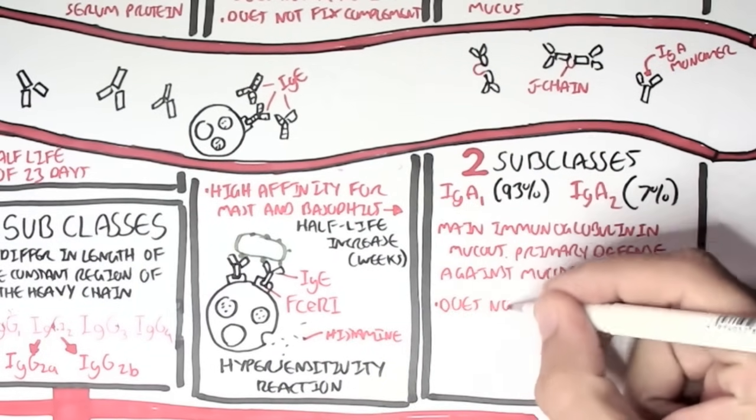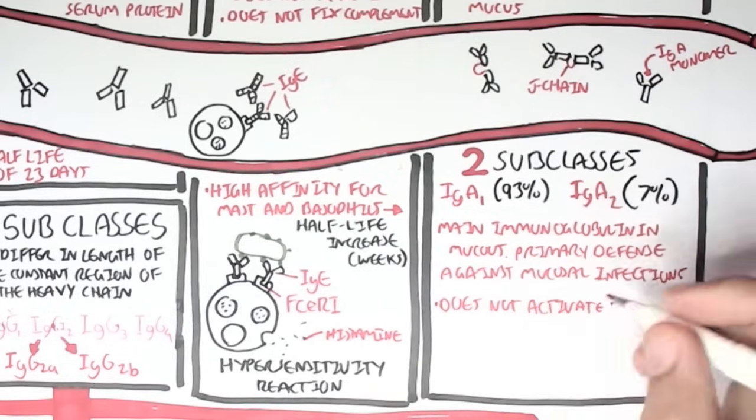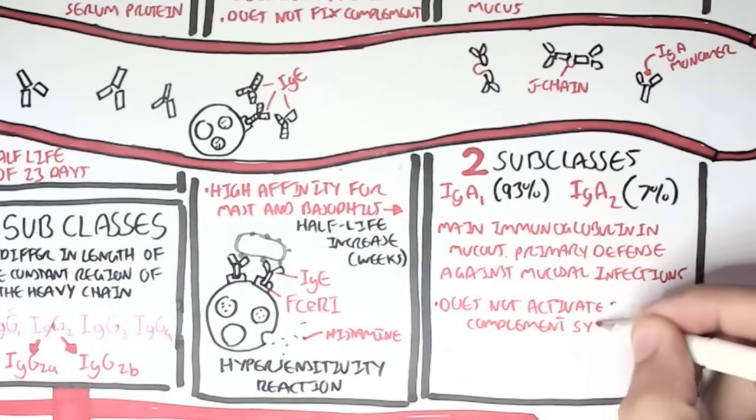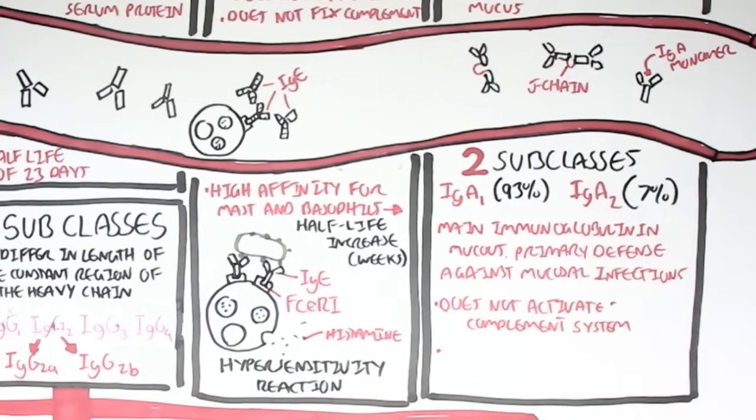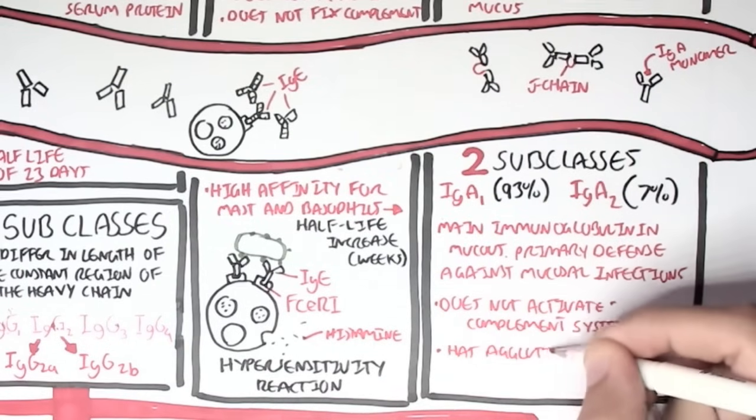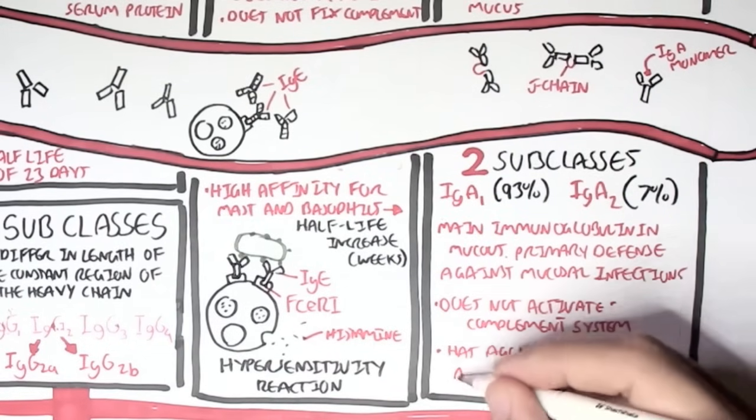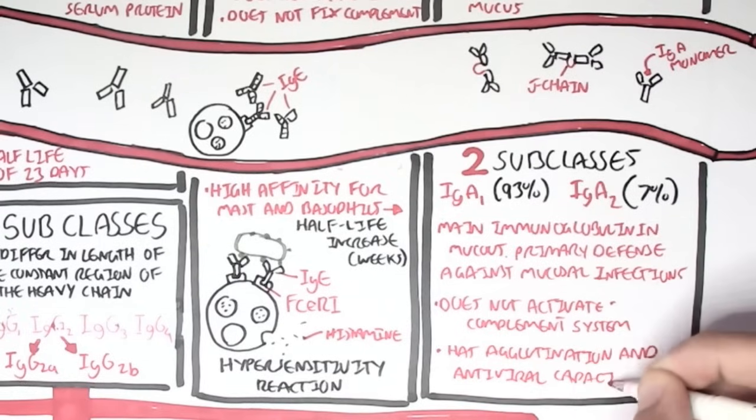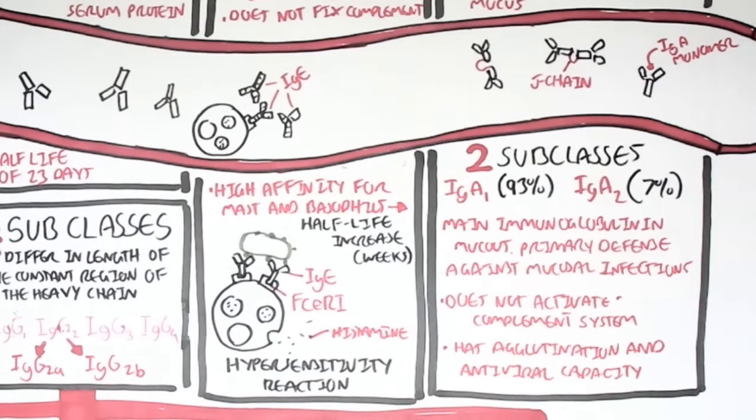IgA does not activate complement because we don't want an inflammatory response occurring in the mucosal tract. It does, however, have agglutination and antiviral capacity. And it must have antiviral capacity because there are many viruses that enter the body through the mucosal system.